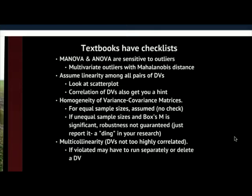Multicollinearity — I mentioned earlier about the dependent variables not being too highly correlated. When you look at linearity, you want to make sure things are linear and not a curve, rainbow, or smile in the data. But if you have very high correlations — some people say 0.80, some say 0.85 — things that are very highly correlated begin to cause problems with the assumptions, and you'll probably need to pull one of them out: either delete one of the dependent variables or run them separately.